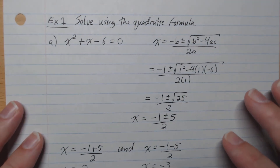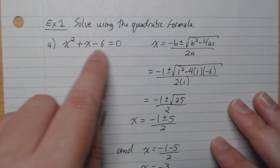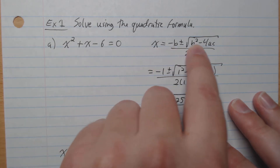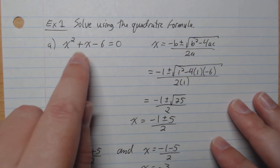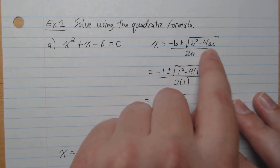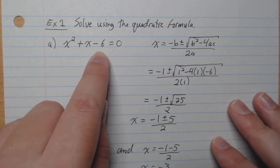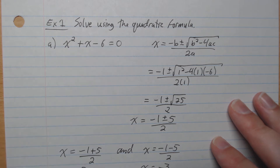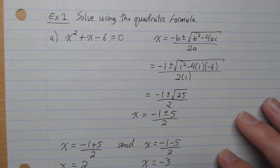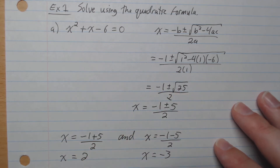Time for some examples — let's get used to using the quadratic formula. Example one: solve x squared plus x minus 6 equals 0. We write down the quadratic formula and plug in: b is 1, so we have negative 1; then 1 squared; minus 4 times a (which is 1) times c (which is negative 6) — be careful to include that negative. We get negative 1 plus or minus root 25 over 2.